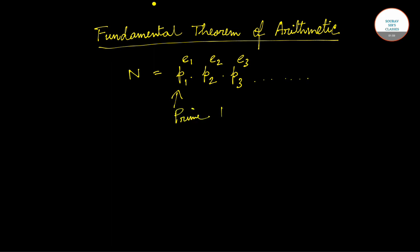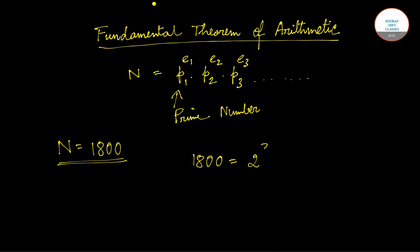For better understanding, let's say n equals 1800. You can factorize 1800 in terms of prime numbers. We can write 1800 equals 2 to the power 3 — that is 8 — into 3 to the power 2 — that is 9 — and into 5 squared. So 8 times 9 is 72, and 72 times 25 equals 1800.